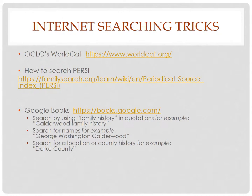You might want to keep in mind a few internet searching tricks. OCLC's WorldCat — housed in Columbus, Ohio — is a world catalog system for libraries across the country and around the world. If there's a book about something, OCLC can tell you where it is, how far it is from you, and whether it's available on interlibrary loan. Also, how to search PERSI: on FamilySearch there is a wiki page that explains the best search methods for PERSI, and it has a lot of really good information about how to find what you're looking for and how it's indexed.